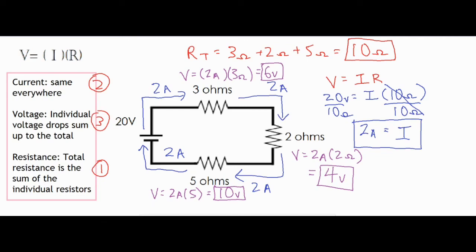So you want to make sure that you're aware that the current is the same everywhere because we have a single path and one loop. That the individual voltage drops equals the sum of the total, which is right over here for this problem—it is 20 volts. And that the total resistance is just adding up all those individual resistors.